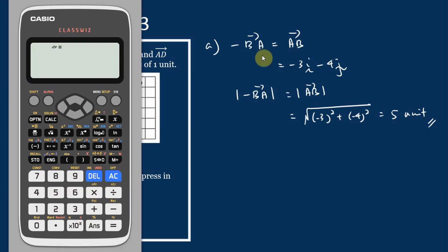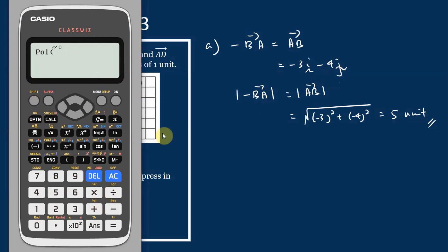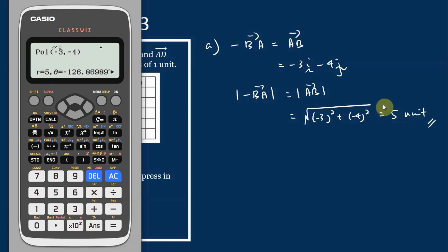Let's use the calculator to check our answer. Using the POL function — Shift POL, key in −3, then comma −4, close bracket, equal. The calculator shows r = 5, which is the magnitude of the vector. So our answer of 5 units is confirmed correct.